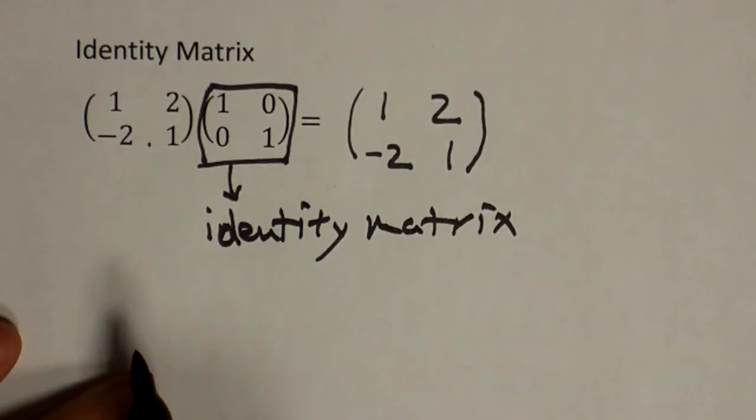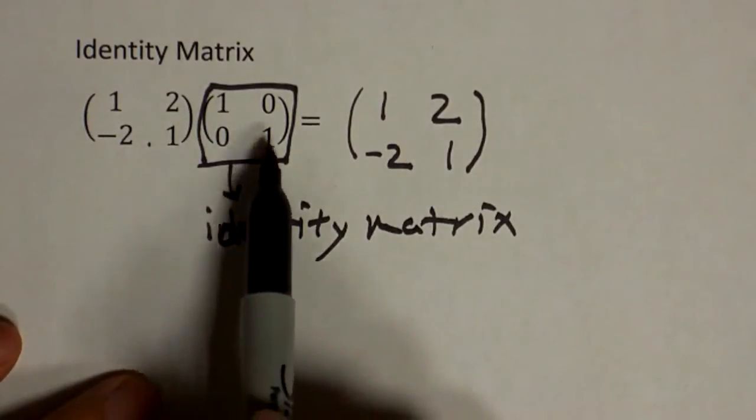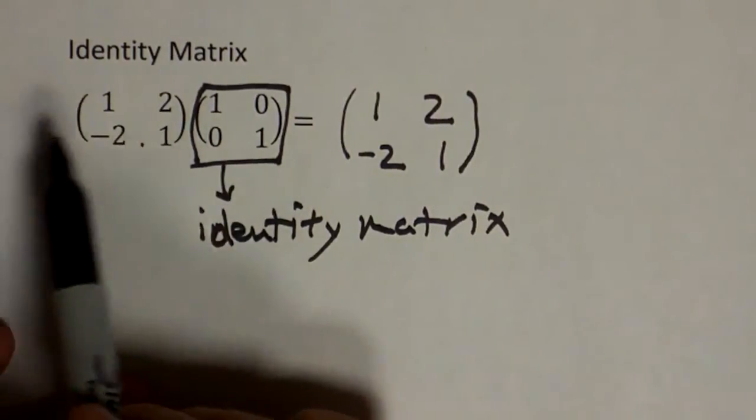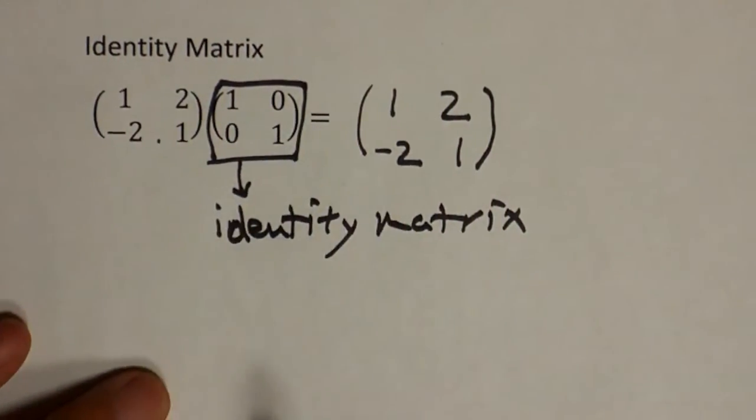And that's why this matrix is called identity matrix. No matter what kind of matrix you multiply this to, whether you multiply it before or after, you'll always end up with the same matrix.